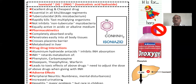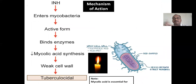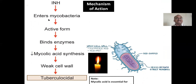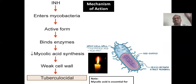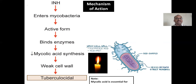Adverse effects include peripheral neuritis — neuronal problems — which is why isoniazid is always given with B-complex vitamins. Isoniazid causes neuronal damage. Mechanism of action: INH enters the mycobacteria in its active form, binds to an enzyme, and decreases mycolic acid synthesis. The cell wall is made up of mycolic acid — a waxy material — essential for the organism's cell wall synthesis. So isoniazid weakens and destroys the cell wall.